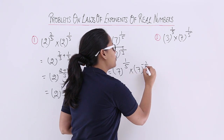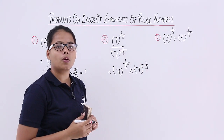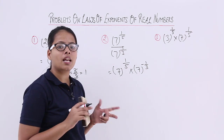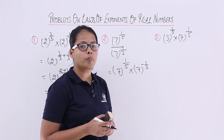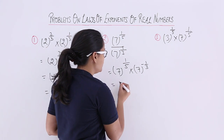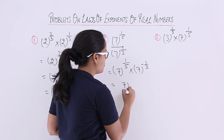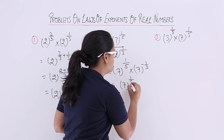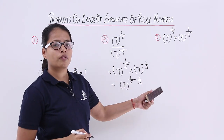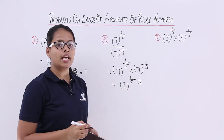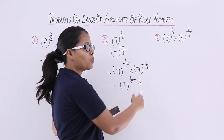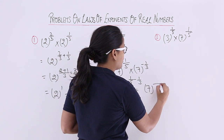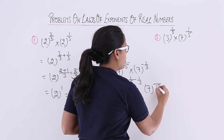When you bring the denominator term into the numerator, the sign of the exponent gets inverted — it was positive, so it becomes negative. Since the bases are the same, the powers get added. In this case, one of the powers is negative, that's why you are getting a minus sign: 1 by 5 minus 1 by 3. You will now take the LCM.